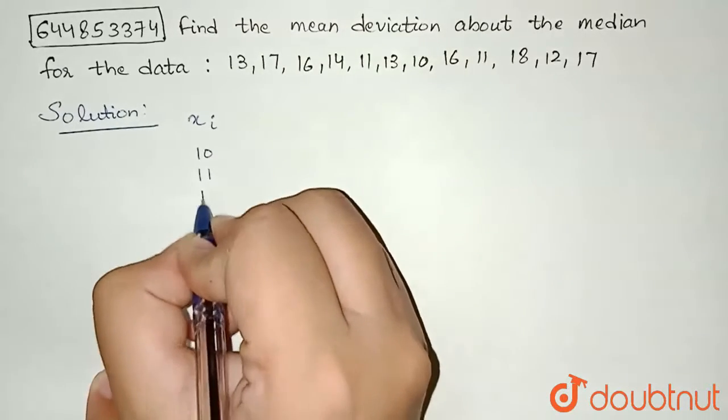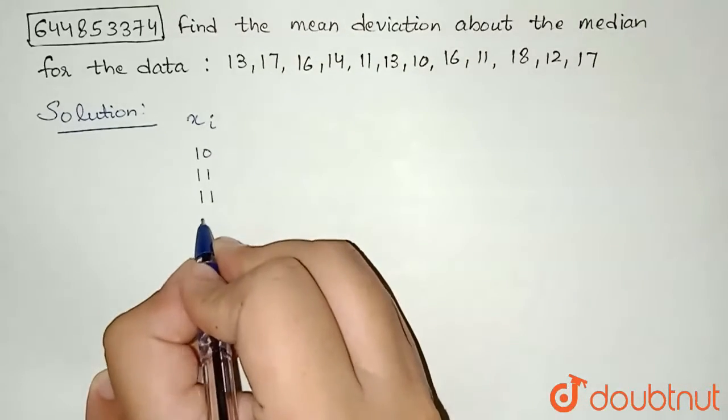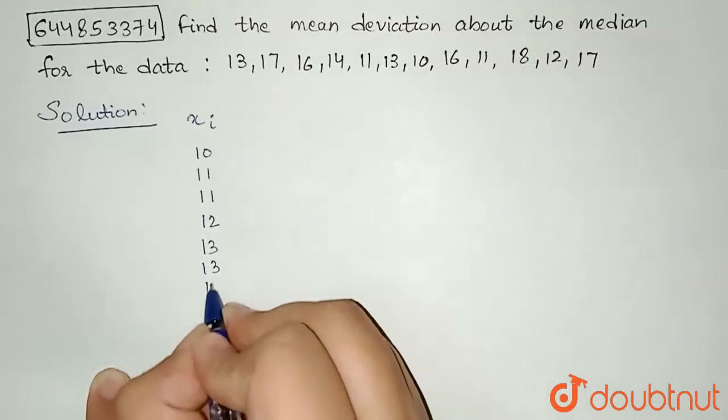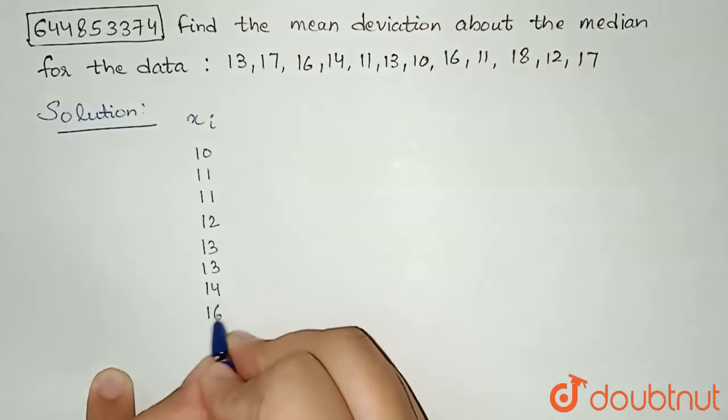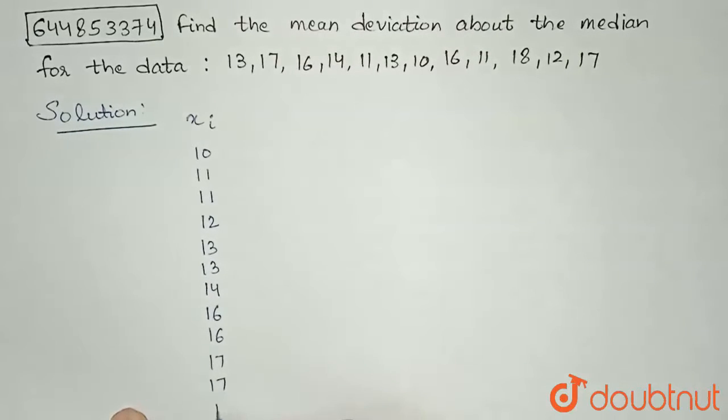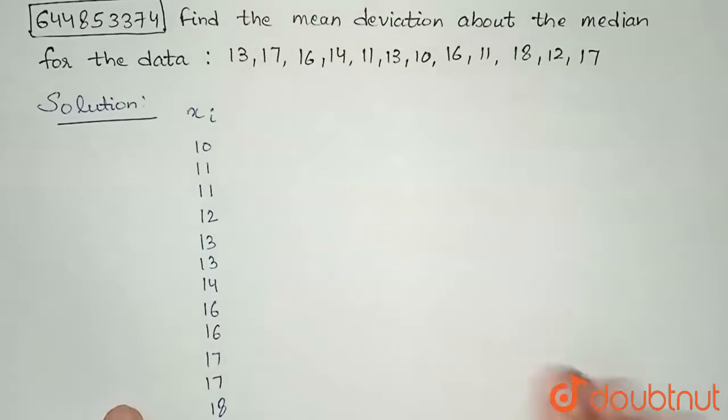Then I can see two 11s, then I can see one time 12, I can see two times 13, one time 14, then I have twice 16, then two times I have 17, and one time I have 18.